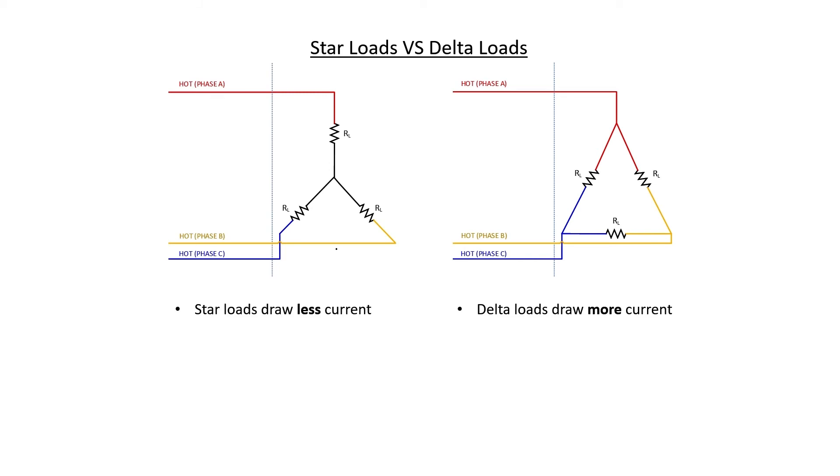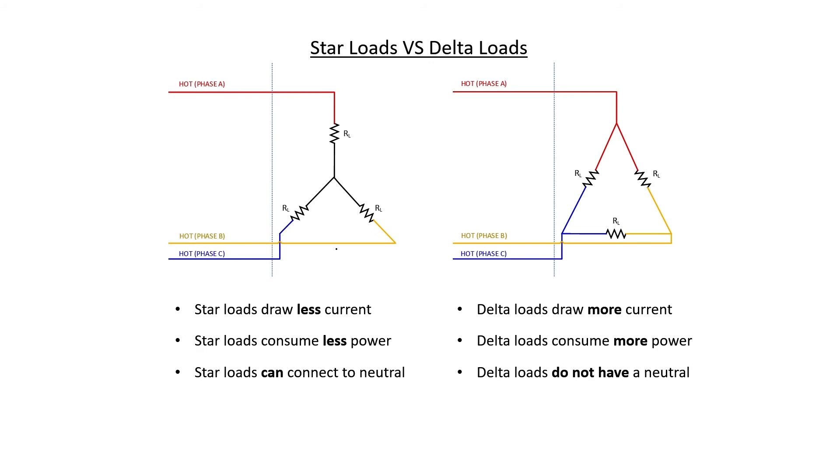Let's now summarize the differences between star and delta connected loads. First of all, star loads draw less current because they have a lower voltage from phase to neutral. Delta loads draw more current because each load sees higher voltage. Star loads consume less power because at a lower voltage, you have a smaller V squared over R. Delta loads, on the other hand, consume more power. Star loads can connect neutral. A neutral point in a star load is also quite commonly connected to the Earth. Delta loads don't have a neutral at all. They will, however, still have an Earth that's typically connected to the case for safety reasons. It's not shown here on the circuit, but earthing is, of course, very important in any sort of industrial electrical power installation.